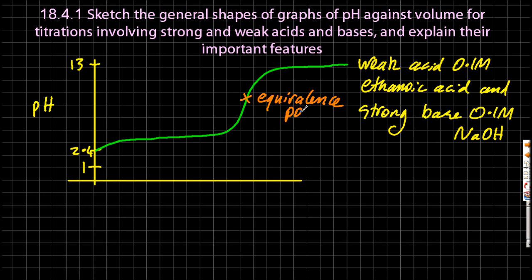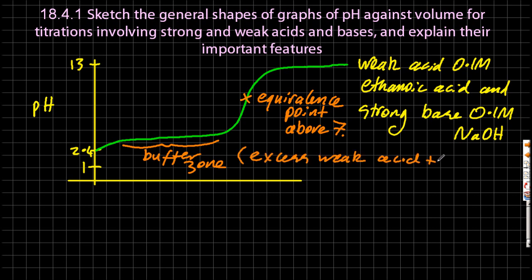The equivalence point, that's a little higher this time. The equivalence point is always shifted towards the stronger component reactant. And that's the buffer zone there. So it's behaving like a buffer, because there I've got a lot of weak acid and not much sodium hydroxide, and that will make a salt and a weak acid, which is actually a buffer. So that part there is buffered.